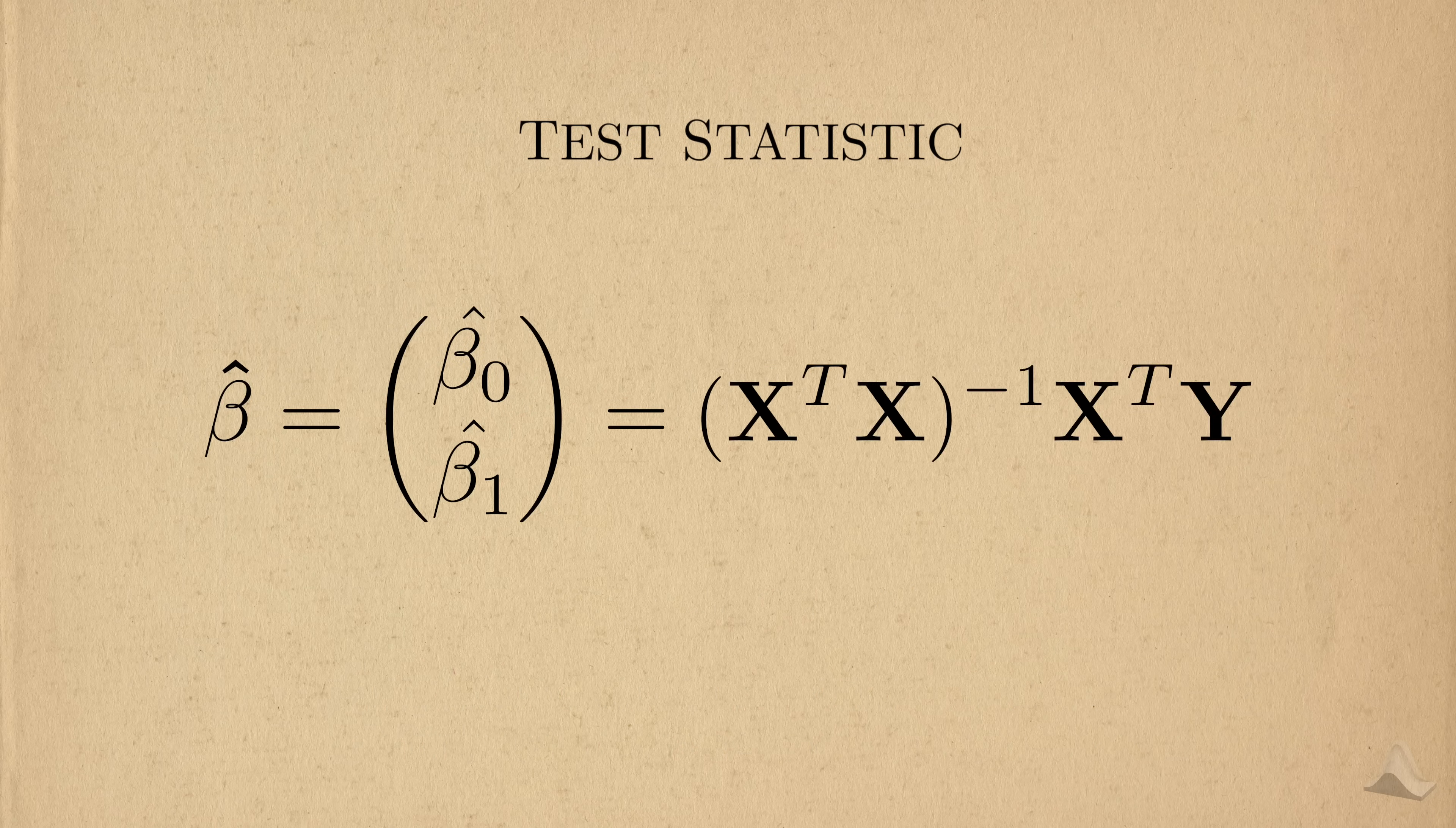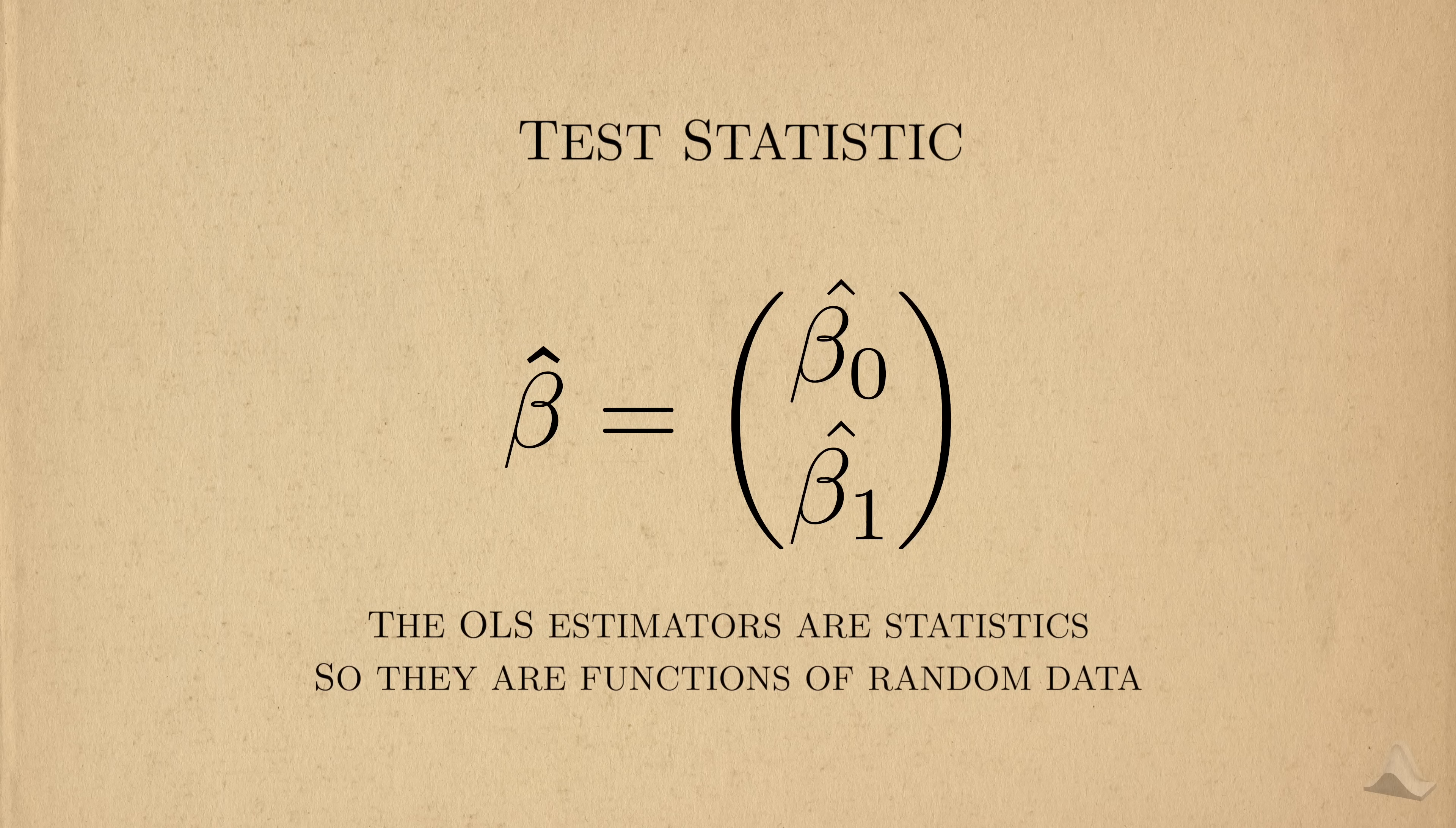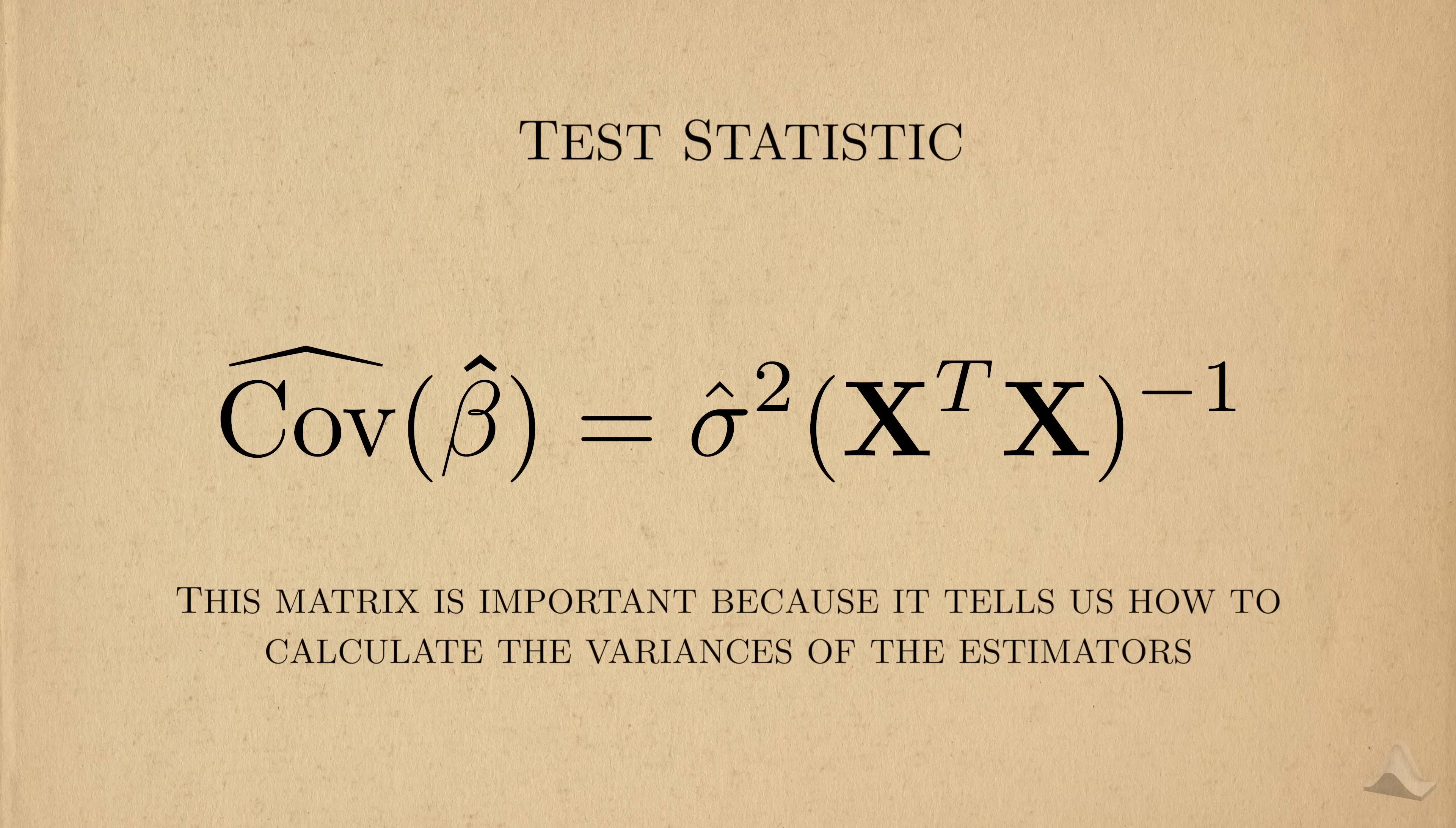Without getting into the gritty details, we can estimate all of the regression coefficients simultaneously using the famous ordinary least squares estimators. For short, OLS. We don't directly observe what the epsilon terms are, but we can estimate them with something we call residuals, which we calculate by taking the OLS estimators and using them to see how far the model is from the actual outcome. By taking the variance of these residuals, we can get an estimate for sigma squared. The OLS estimators are statistics, so they're functions of random data. By extension, they're also random variables. The covariance matrix of the OLS estimators is given by this expression here. The variance of the noise multiplied by this inverse matrix here. It's a covariance matrix because we have to consider both the variances and the covariances of the estimated coefficients. But remember that we had to estimate the variance, so we replace it with its estimator, sigma squared hat. I'm highlighting the covariance matrix here because it supplies us with the variances for each of the estimators.